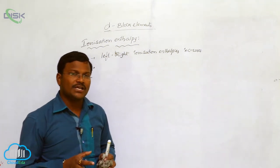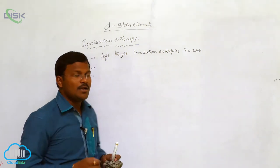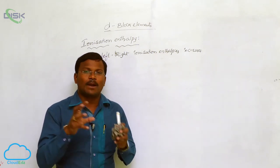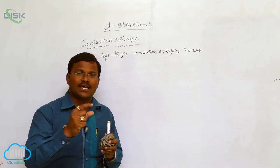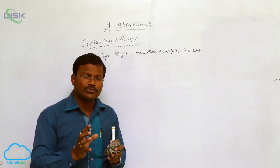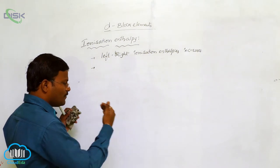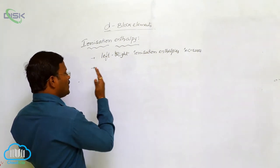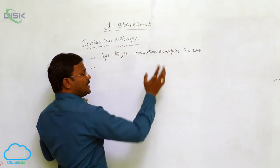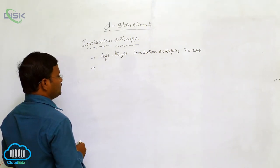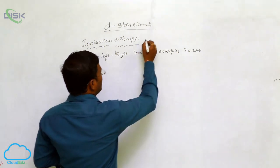The amount of energy required to eliminate an electron from the valency orbit of a given element is called ionization enthalpy. Ionization enthalpy is generally inversely proportional to atomic size. Those transition elements with lesser atomic size require a huge amount of energy to eliminate electrons from their valency orbit. As a general concept, from left to right in the 3d, 4d, 5d, and 6d series, as atomic size decreases, ionization enthalpy increases.